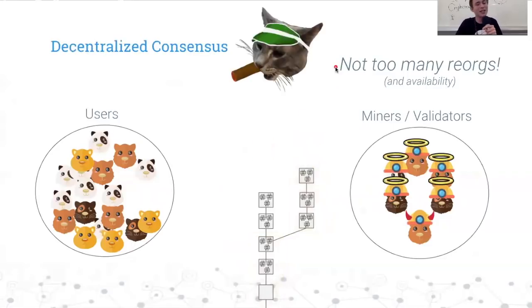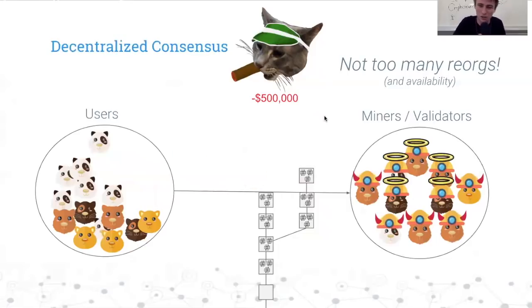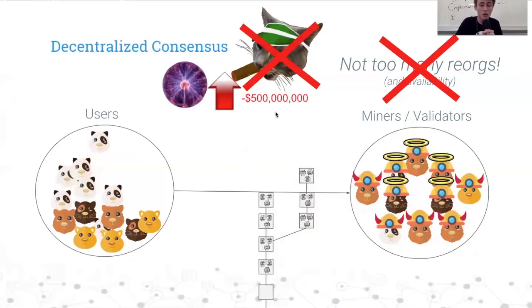However, there is sometimes an issue, and this is the 51% attack problem. Essentially, a bad cat can spend a bunch of money, let's say $500,000, to recruit a bunch of evil miners to pollute the mining set and make it so that the honest majority is no longer a majority. Now we have these dishonest miners that want to reorg the chain. That gets rid of our not-too-many-reorgs property, which is really the whole point of having miners in the first place. What we really want to do is make it so that this cost of $500,000 is $500 million, as high as possible, so that these attacks are not actually even feasible. We can try using Plasma.